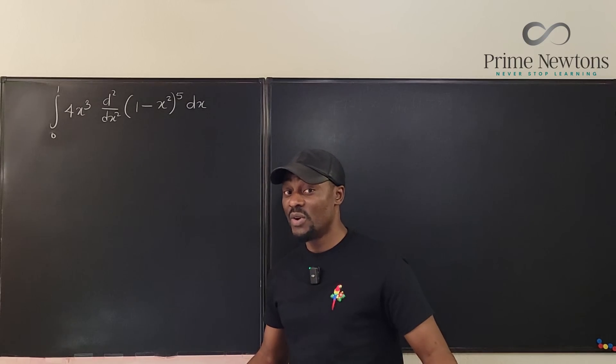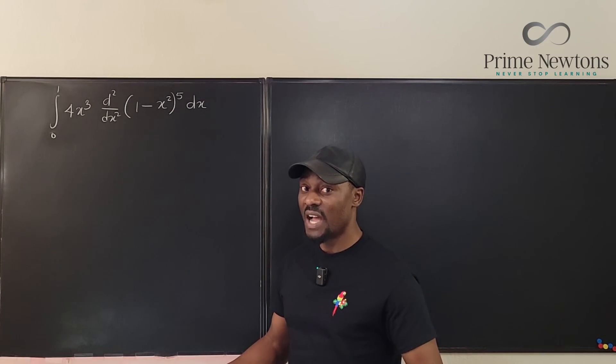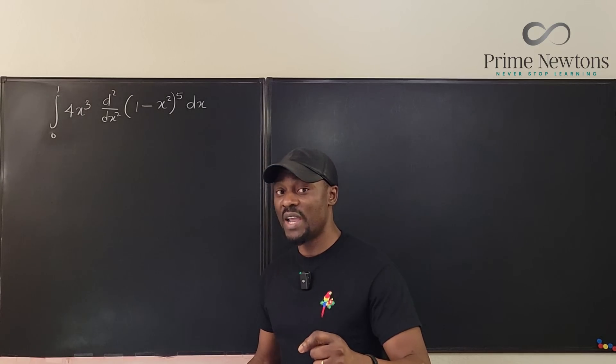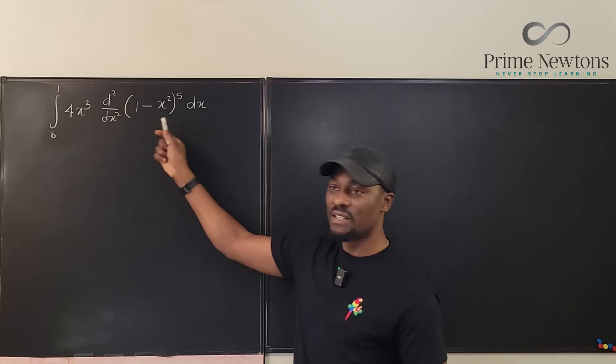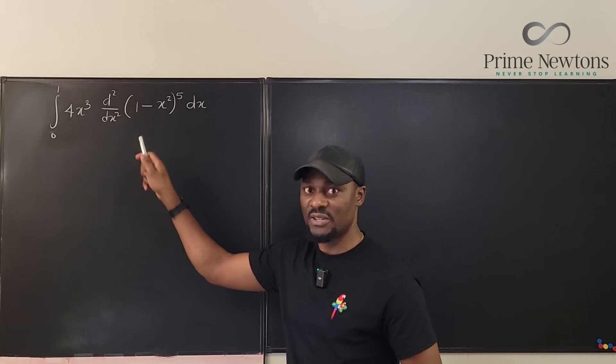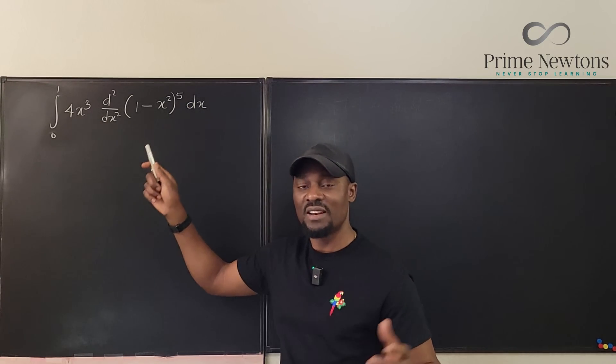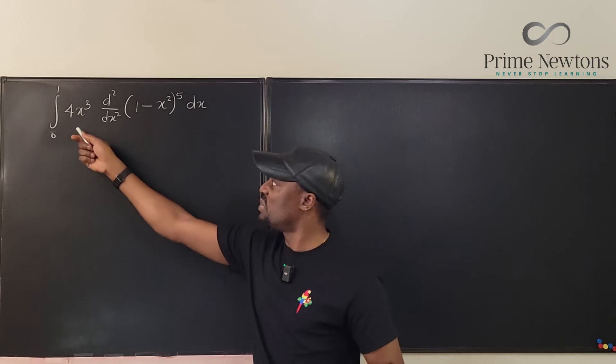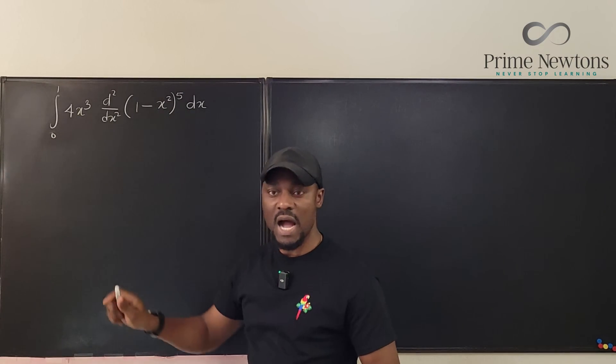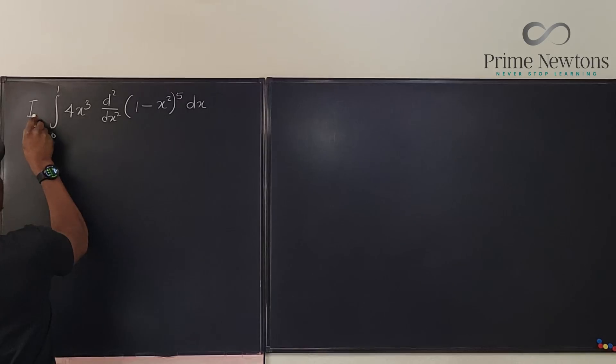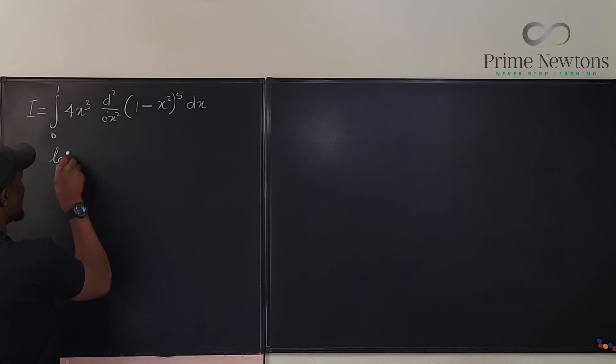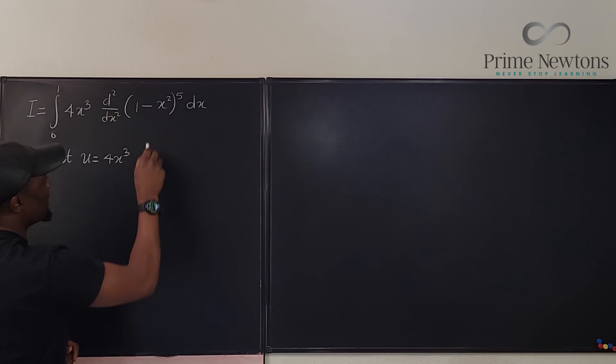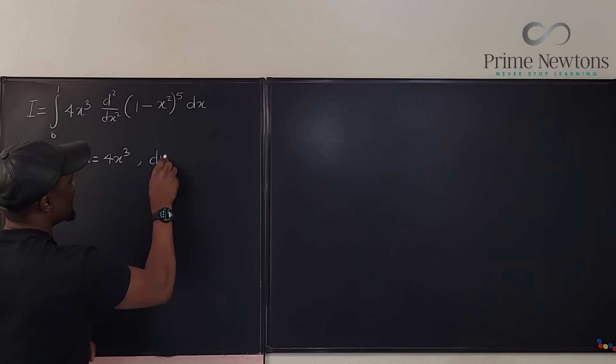So whenever you do integration by parts you have to always decide which one am I going to integrate, which of the two factors am I going to differentiate. It looks like this is already being differentiated so you do the opposite you integrate and this is easy to differentiate which makes our life a lot easier. And just so I don't repeat all of this I'm going to call this I. So let u be 4x cubed.